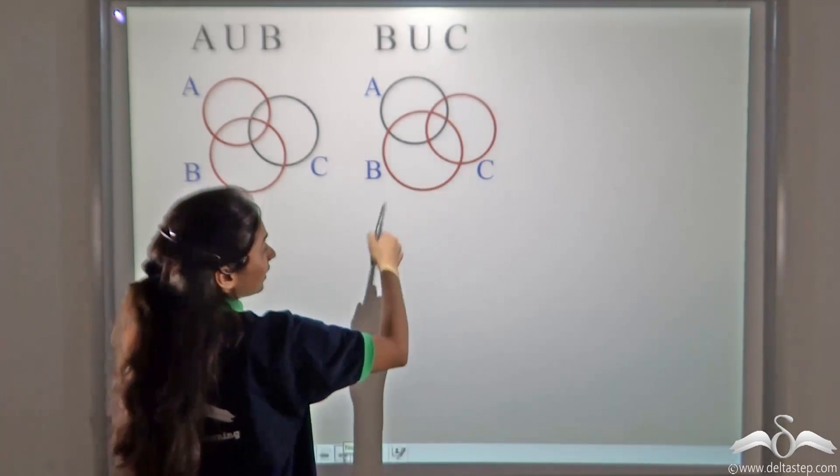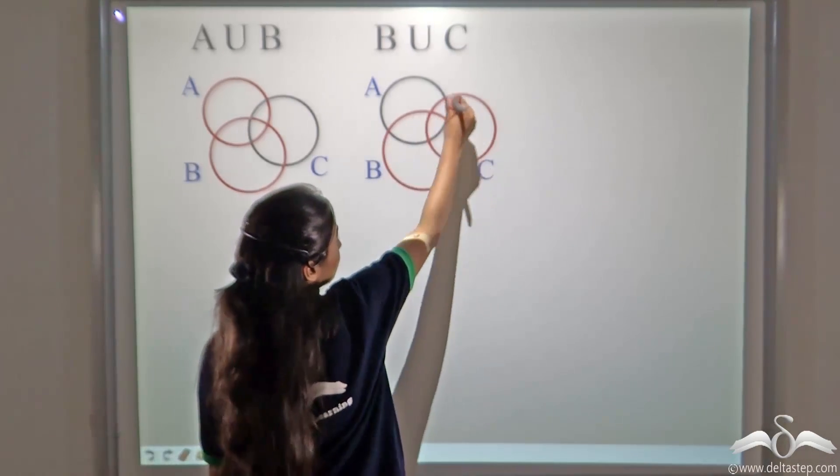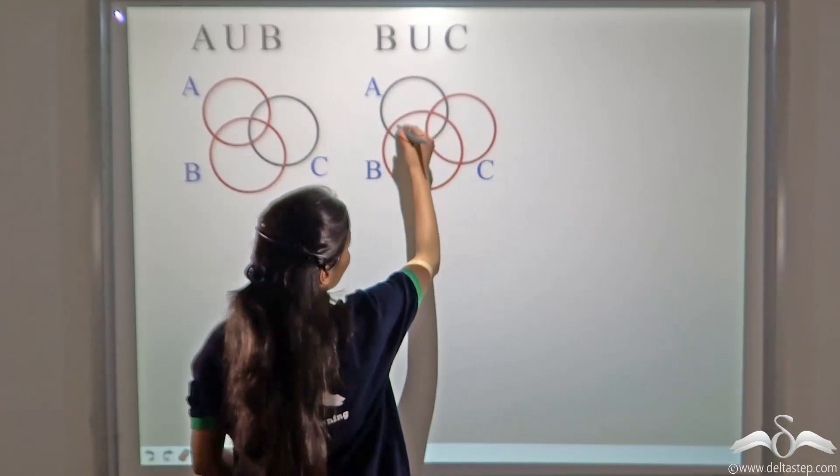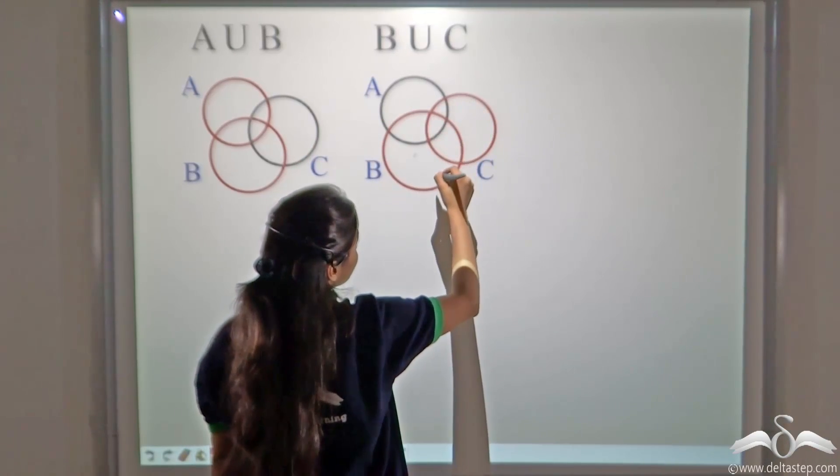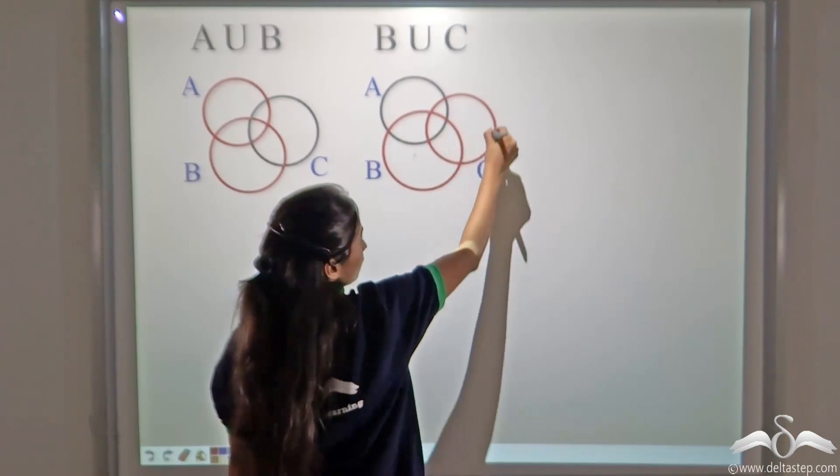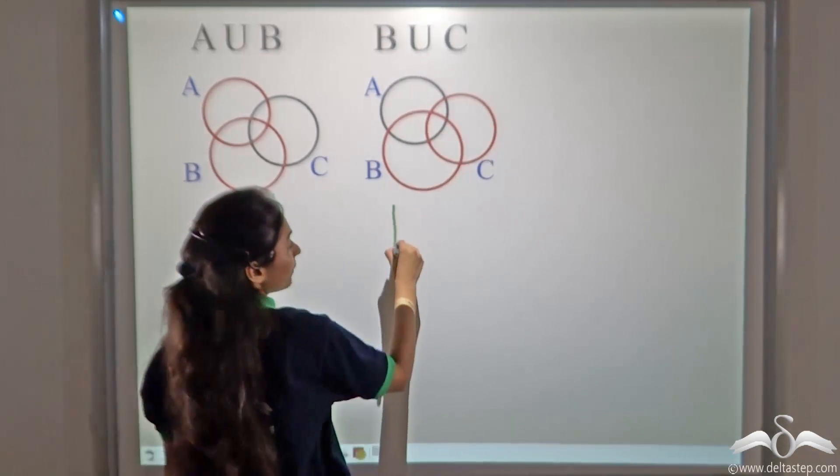B union C can be denoted by these two circles. Do not see A. Just look at B and C. We can see that the set of elements of B and set of elements of C together will give us B union C.